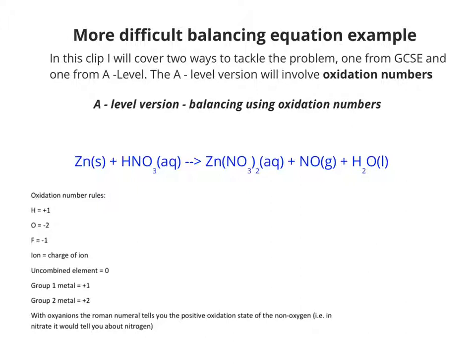So what you do is you assign oxidation numbers to everything, every single element. So an uncombined element such as zinc is going to be zero. So I've put a zero in next to zinc. All my hydrogens are going to be plus one. All my oxygens are going to be minus two.